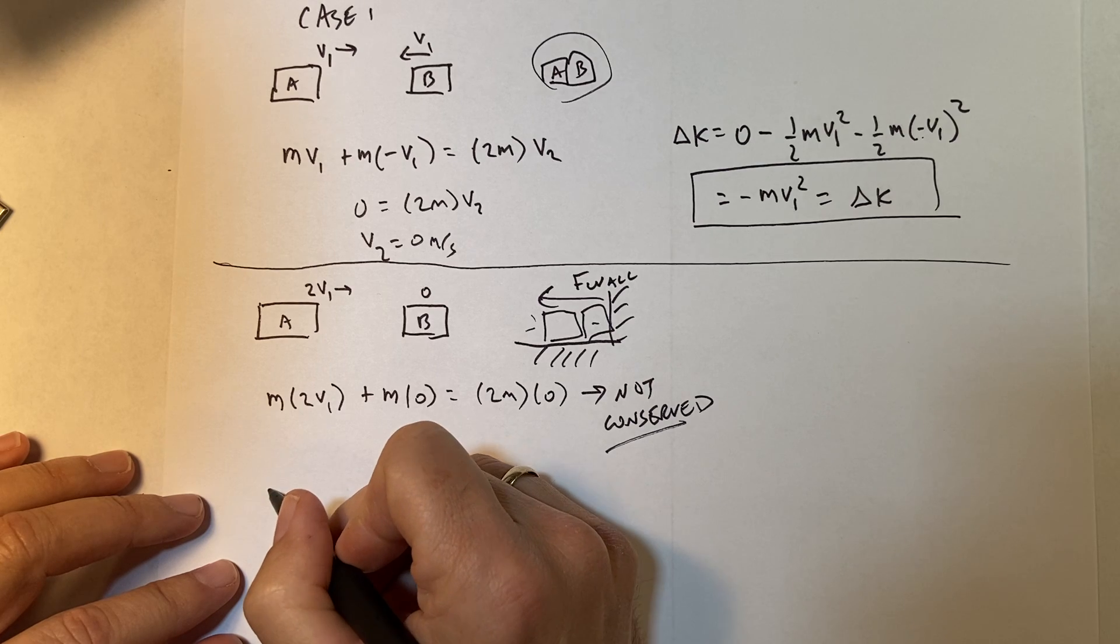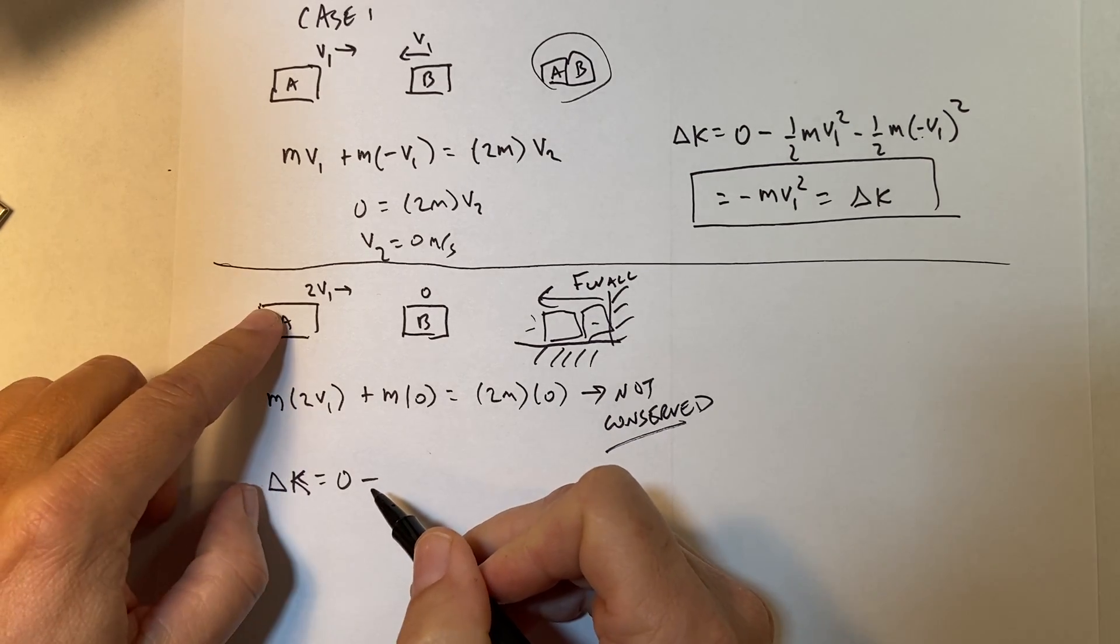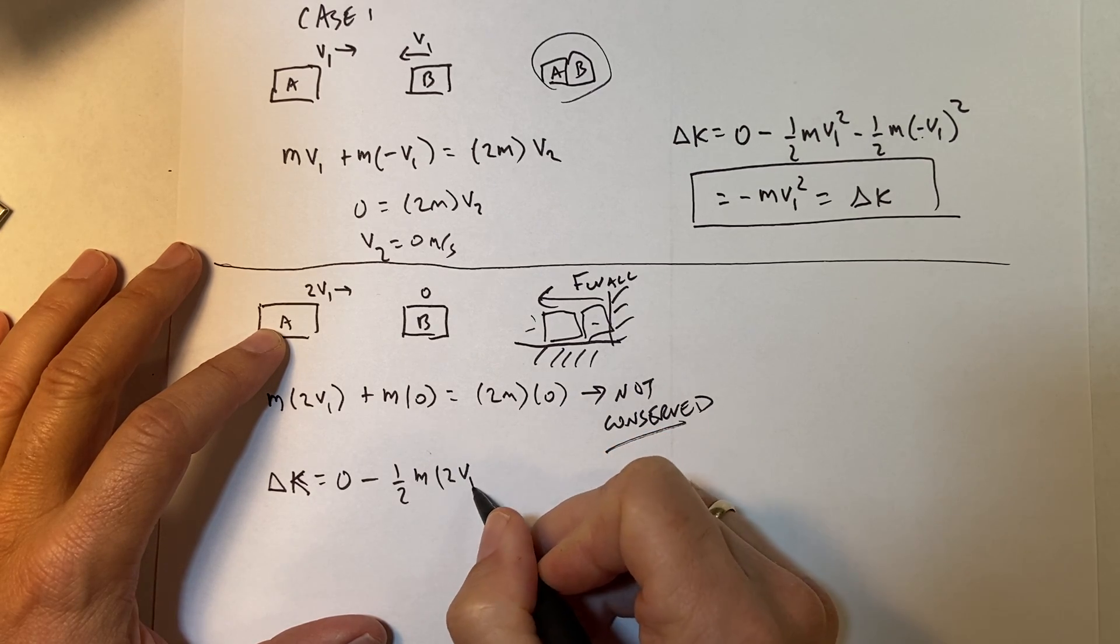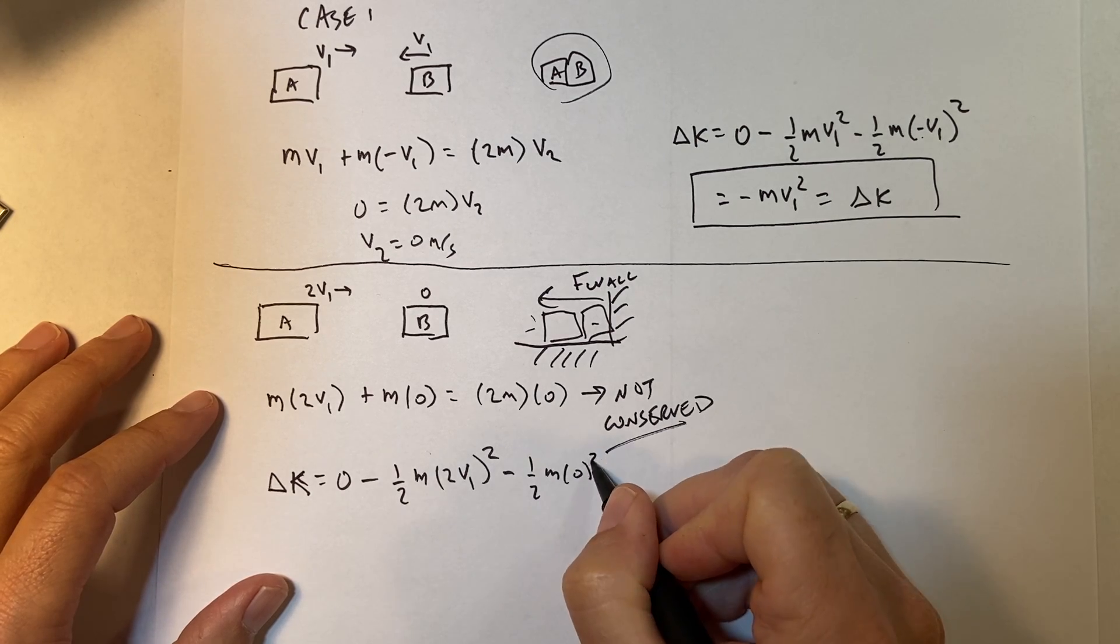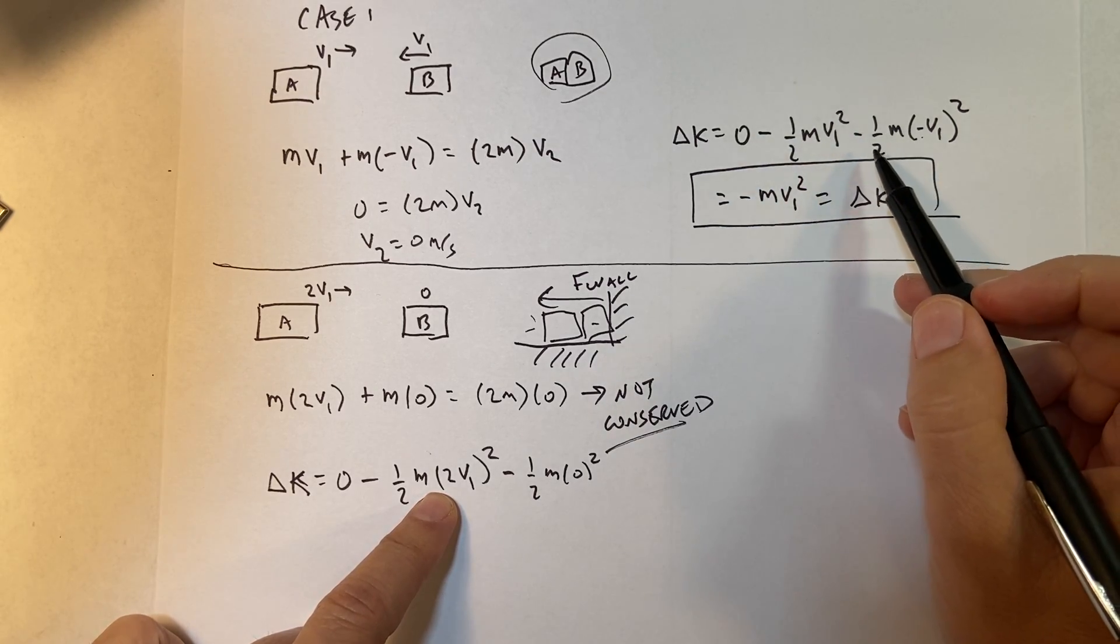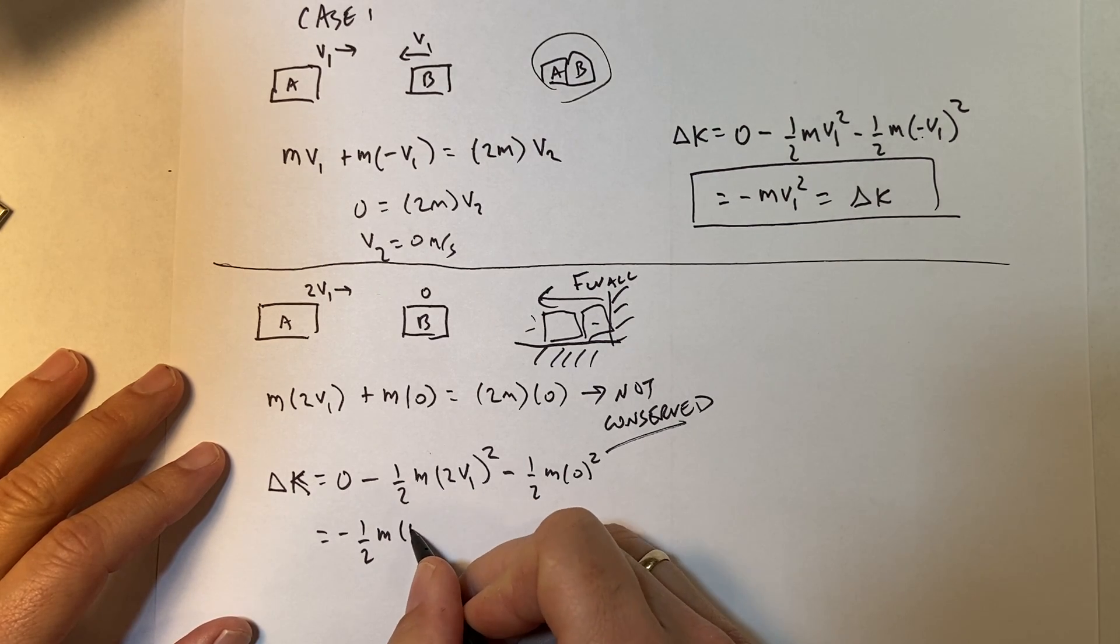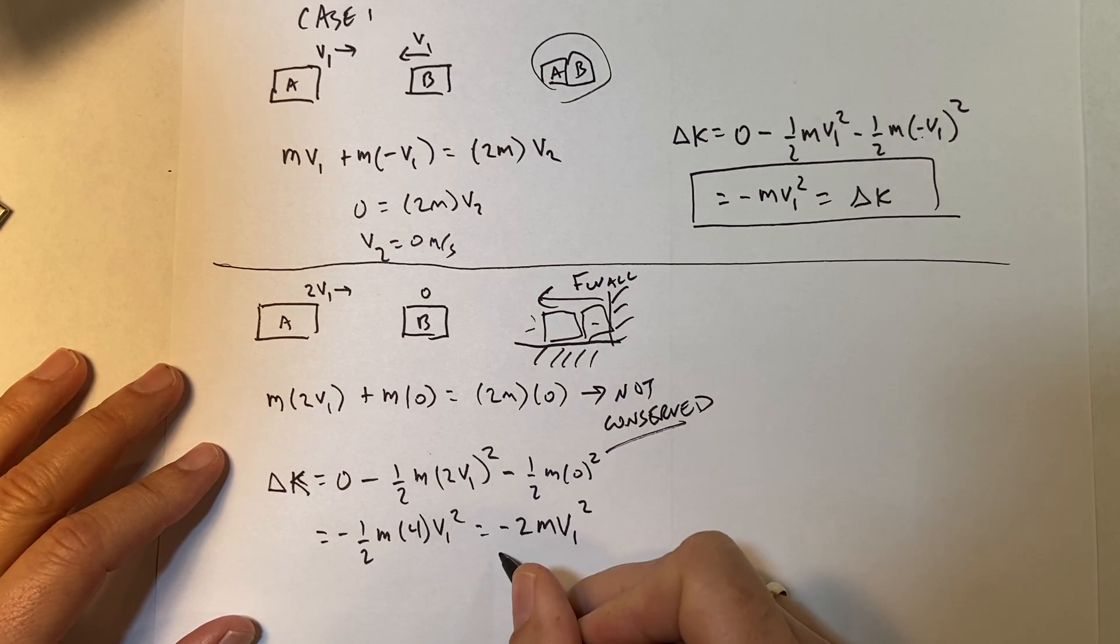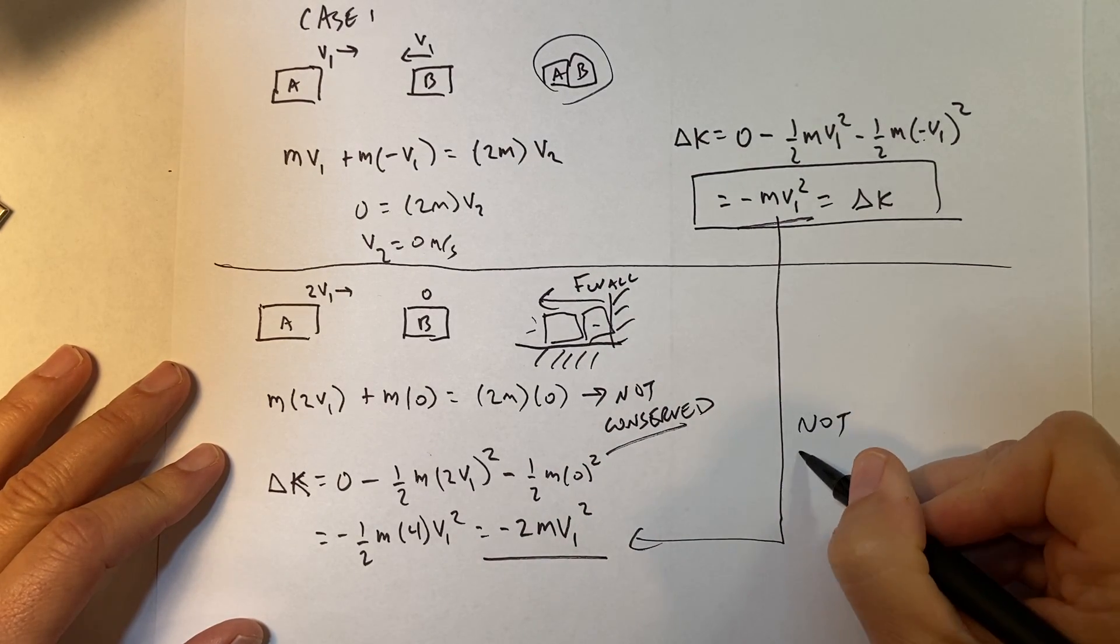What about the change in kinetic energy? Well, let's do that. Delta K is going to be the final kinetic energy, which is zero minus initial kinetic energy of this one, which is going to be one half M 2V1 squared minus initial kinetic energy of this one, one half M zero squared. So you see here, I have a 2V1 and up here, I had two masses. But it's not the same, because look, there's going to be negative one half M times 4V1 squared is going to be equal to negative 2MV1 squared. It's not the same.